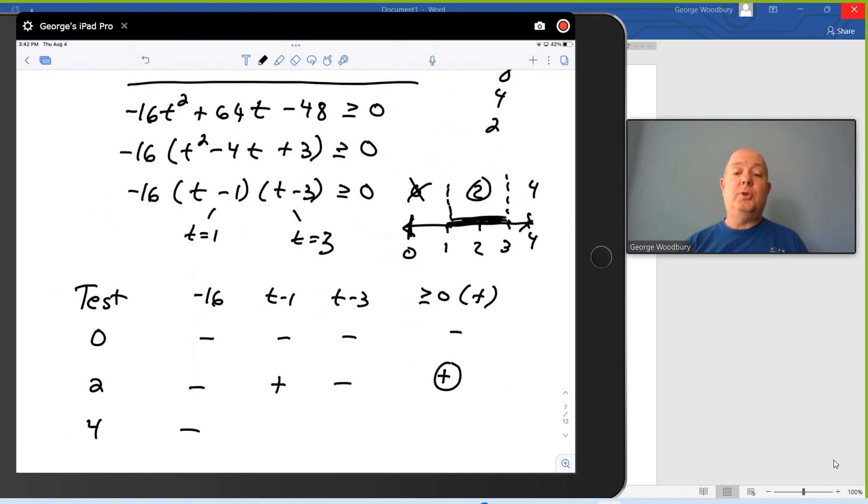If I substitute 4 in, 4 minus 1 is positive 3. 4 minus 3 is positive 1. I've got the product of a negative number and two positive numbers. That's negative, not what I wanted. So 4 is not a solution either. All the solutions are between 1 and 3.